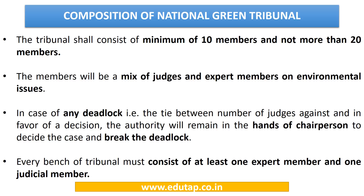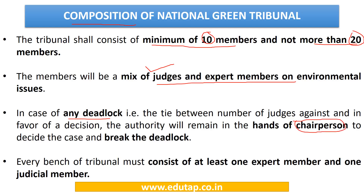This is a very important slide describing the composition of NGT. NGT consists of a minimum of 10 members and a maximum of 20 members. The members comprise a mix of both judges and expert members on environmental issues. In case of a tie for and against a decision, the chairperson of the tribunal will decide and break the deadlock. Each bench of the tribunal must consist of a minimum of two members, i.e., one expert member and one judicial member.